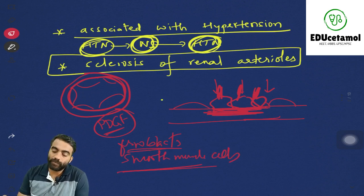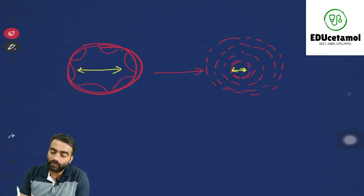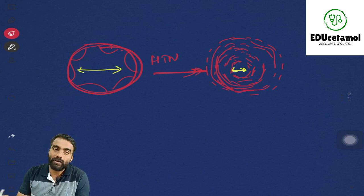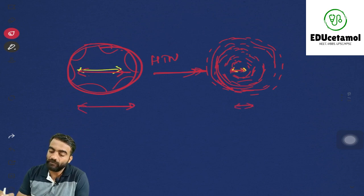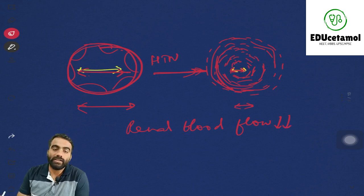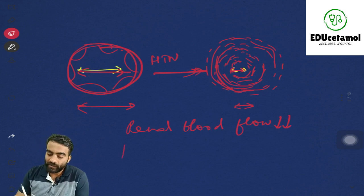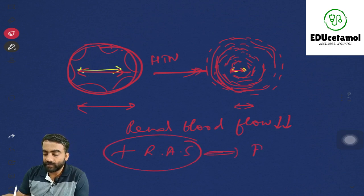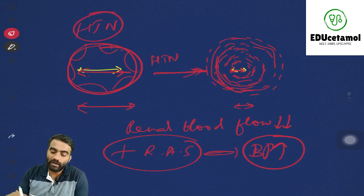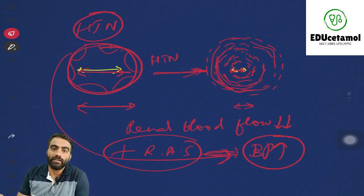Because of this proliferation, the lumen is going to get narrowed. In a normal renal arteriole, due to hypertension there is proliferation of smooth muscles and fibroblasts, and the lumen has become very narrow. When the lumen is narrow, the renal blood flow becomes less — there is renal hypoperfusion. The kidney thinks there is insufficient blood flow and activates the renin-angiotensin system, which further increases the blood pressure. So hypertension was the initiating cause and became the effect also — causing a self-perpetuating cycle.